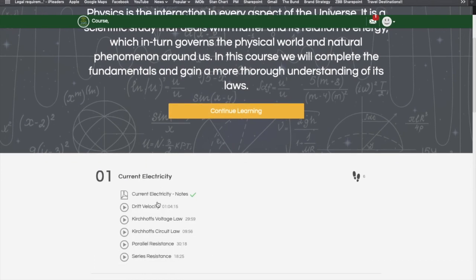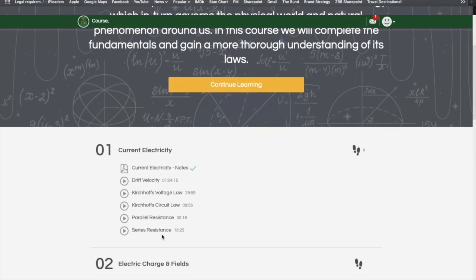By clicking any of the topics it will reveal all of the items that are under it. In this case you've got one PDF document and you've got five video lectures. A total of six items which is indicated on the icon here.